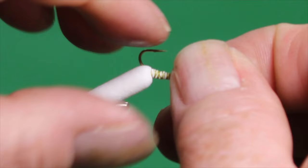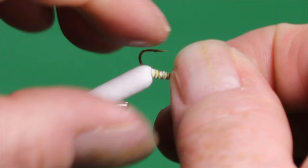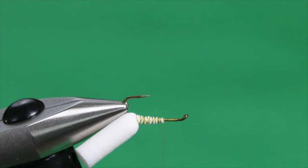Now, normally I would just rotate the vise. But to keep everything in frame, I'm going to take the hook and turn it upside down. Because as this fly's name suggests, it's a back swimmer. So they swim on their backs.